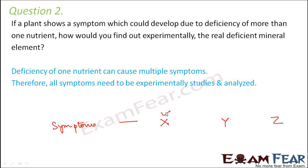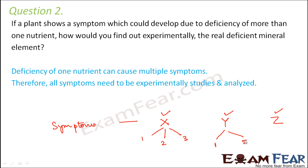By our knowledge on the minerals, we know that symptom X can be caused by minerals 1, 2, and 3 — for example, 1 can be sodium, 2 can be phosphorus, 3 can be nitrogen. Similarly, deficiency symptom Y can be because of mineral 1 or mineral 5. Symptom Z can again be because of mineral 1, mineral 2, or mineral 8.